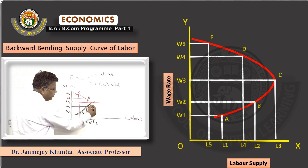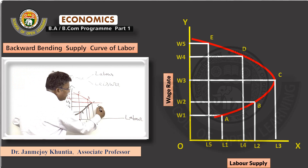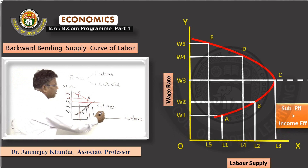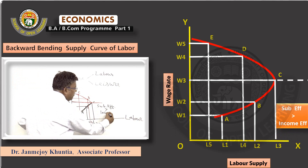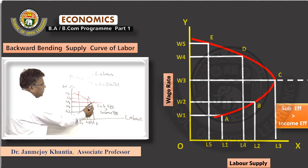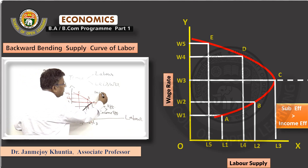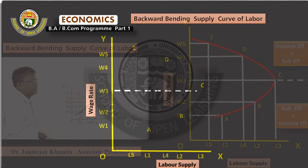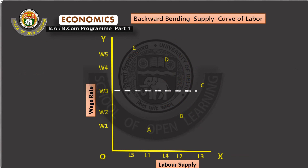The upward sloping labour supply curve is due to the substitution effect being stronger than the income effect. The backward bending portion is possible because the income effect is stronger than the substitution effect. Let us look at the diagram of the backward bending supply curve of labour once again.